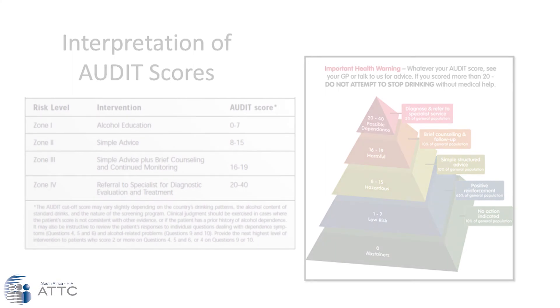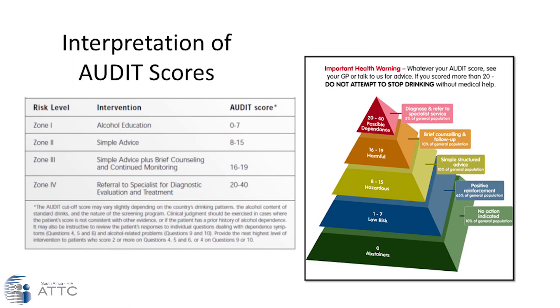Thank you Tando for completing these questions. If it's fine with you, we can go through the score and then we can decide what to do after this. Tando's AUDIT score was 17. According to the scoring pyramid, this puts him in zone three, which is indicative that he has a high level of alcohol problems. An appropriate response would be to provide brief counselling and continued monitoring.